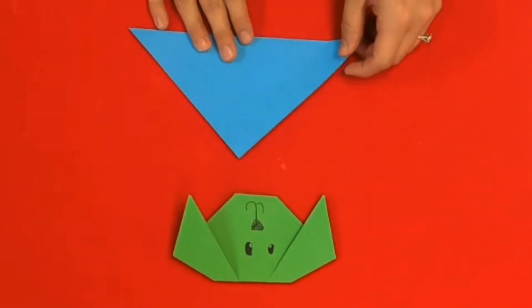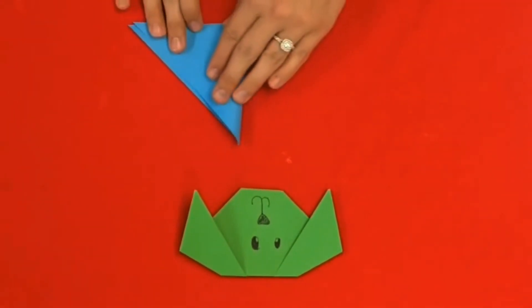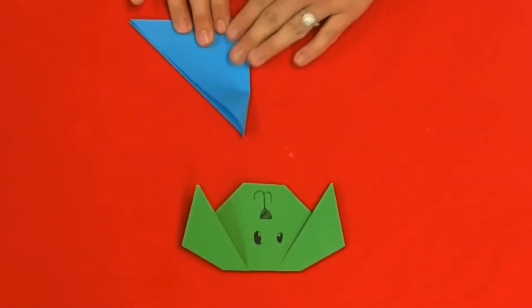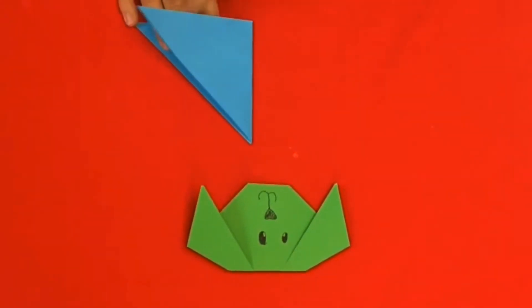Next, fold the triangle in half by folding the left corner to the right corner. Unfold the fold you just made.